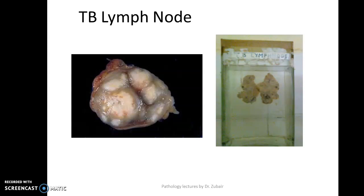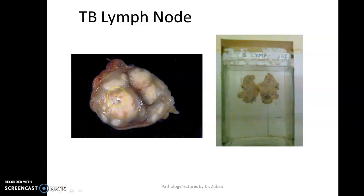An especially important specimen in the Indian setup is the specimen of tuberculous lymph node. The gross features: it is a matted lymph node — there are multiple lymph nodes fused together, making them matted. The cut surface shows cheesy white areas. After you describe the specimen, the examiner will ask follow-up questions.